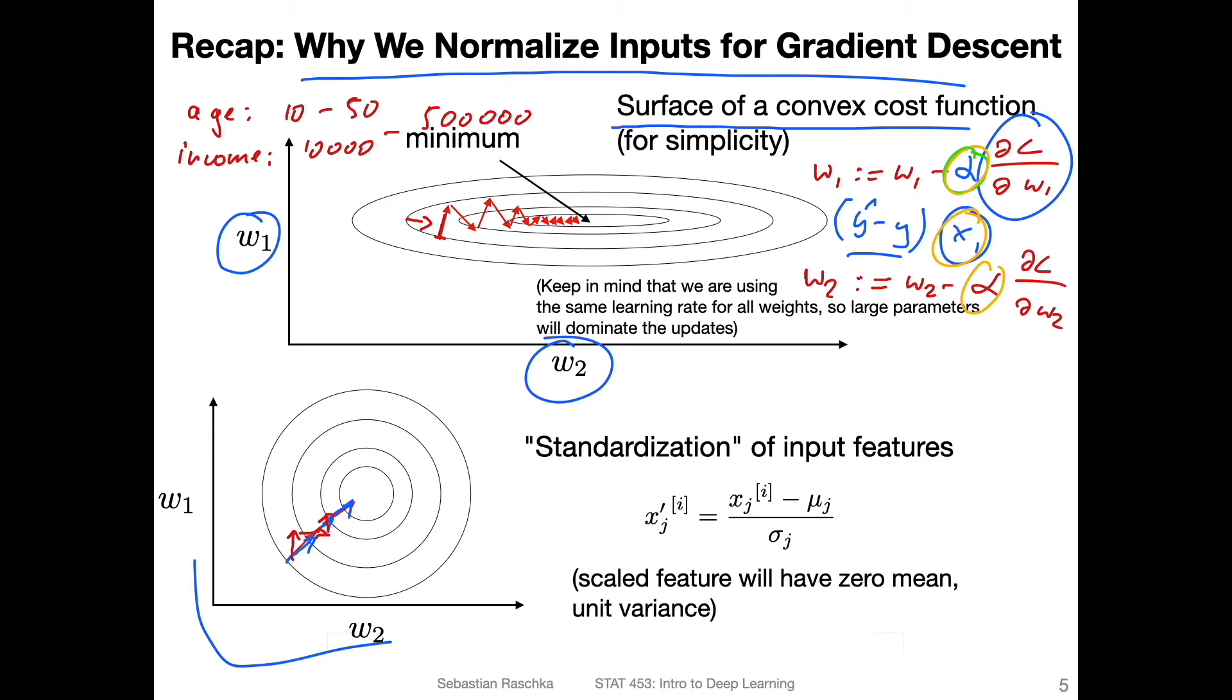One issue is also always when we have very large or very small numbers in the computational context, because then we also have computational instability issues. So one common theme that works pretty well in practice is z-score standardization. So people just call it standardization, it's essentially giving your data or features the properties of a standard normal distribution.